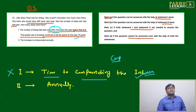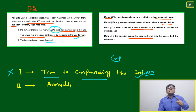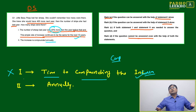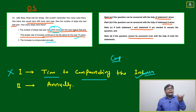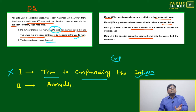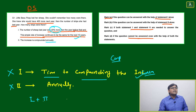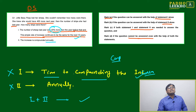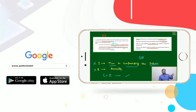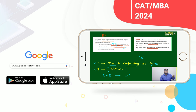Statement 2 says the increase is compounded annually. But if you take Statement 2 alone, you still can't conclude — the rate of increase and number of years from Statement 1 are missing. However, merging both statements together gives you everything you need: Statement 1 provides the rate and years, Statement 2 provides the compounding period. Combined, they are sufficient to answer the question.